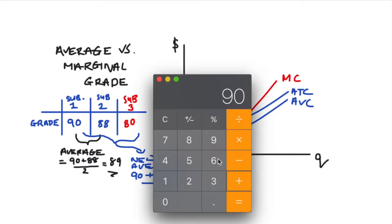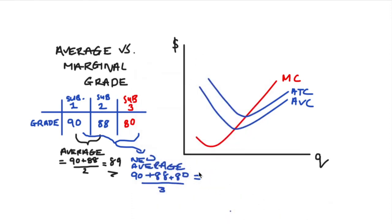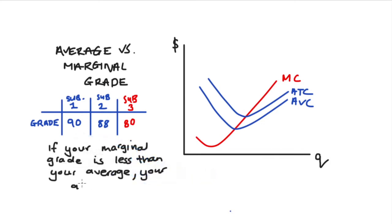What is going to happen to your average after you get that grade? Our new average is 90 plus 88 plus 80 divided by 3, which equals 86. Our average has decreased. This is a result that can be generalized: if your marginal result is lower than your average, then your average will decrease.